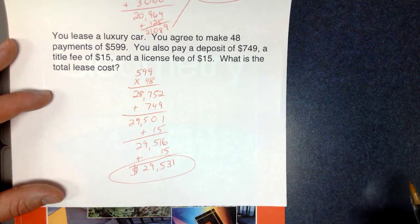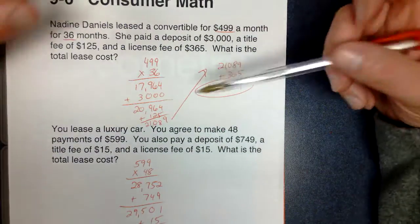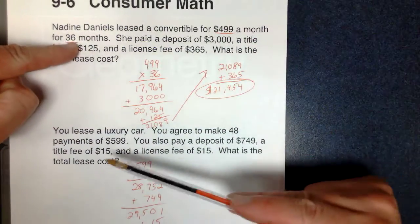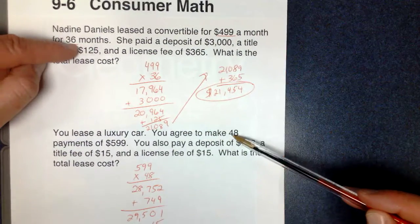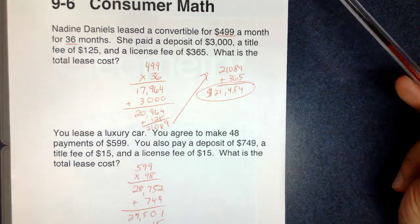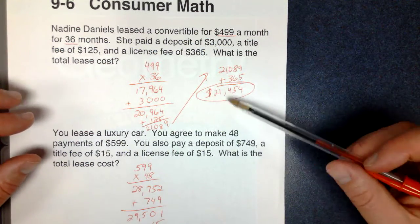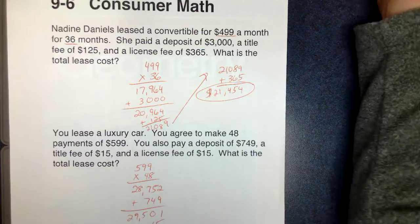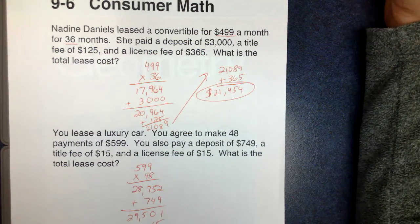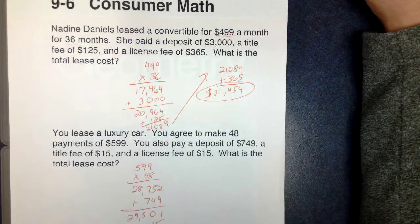Now, there are benefits and drawbacks to leasing a car. The drawback to leasing a car is when your months are up. So like this one, 36 months, this one, 48 months. When those months are up, you have to turn the car back into the dealership unless you buy it from them. So all of those payments you made were basically made to the car dealership so that you could rent the car for that number of months. That's the drawback to it.